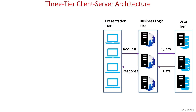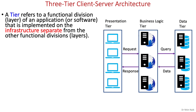Now we look at the second term, tier. A tier refers to a functional division of an application that runs on infrastructure separate from the other functional divisions, meaning that we can distribute the various functionalities — or simply layers — on different machines. Layer is a logical separation of functionalities, whereas tier is a physical separation of functionalities. In other words, tiers are the physical implementation of layers. As we have seen three functional layers in the three-layer architecture, each layer can be implemented on separate infrastructure as one tier.